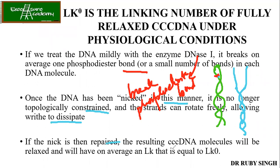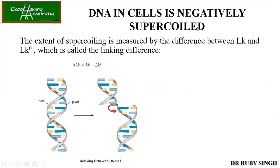If the nick is then repaired, the resulting CCC DNA molecules will be relaxed and will have an average LK equal to LK₀. There is no writhe, there is no constraint, and the structure mimics physiological conditions. The extent of supercoiling is measured by the linking difference: ΔLK = LK − LK₀.